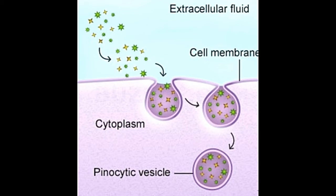Specificity — Phagocytic cells are usually very specific in the particles they engulf. Pinocytic cells are usually not specific in the molecules they invaginate.